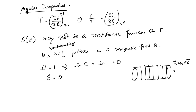Let us start looking at negative temperature. The thermodynamic definition of temperature is T = (∂S/∂E)⁻¹ at constant N and V, or equivalently 1/T = ∂S/∂E at constant N and V. There is no guarantee that S as a function of E is a monotonic function. In fact, no law of thermodynamics is violated if S is not a monotonic function of E.